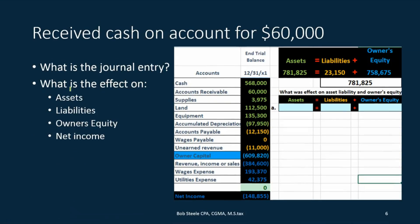Next transaction: received cash on account for $60,000. Is cash affected? Yes, because we received cash. Cash is going up. Cash has a debit balance — how do we make something go up? We do the same thing to it, which in this case would be a debit. So we debit cash. What are we going to credit? You might say we got $60,000 because we did work, so maybe revenue should go up. But we did that work in the past — this is the work we sent the invoice out for last time. We can't credit revenue again.